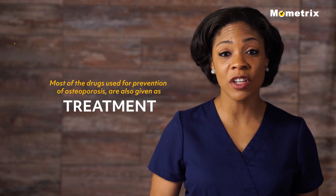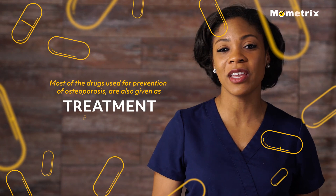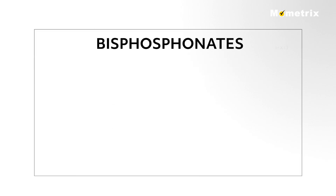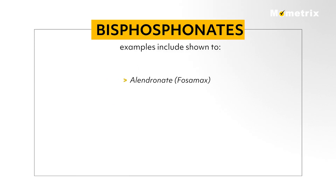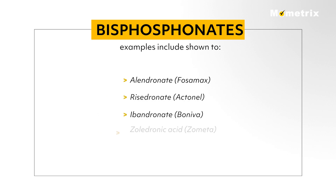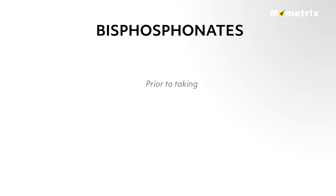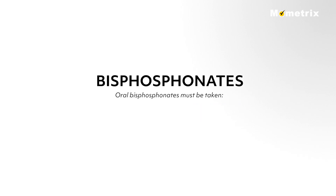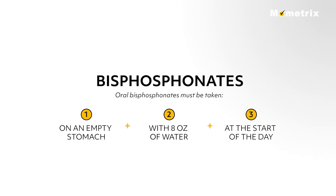Most of the drugs used for prevention of osteoporosis are also given as treatment. The first drugs usually given are bisphosphonates, which have been shown to prevent the loss of bone density as well as reduce the risk of fractures. Examples include alendronate, risedronate, ibandronate, and zoledronic acid. Prior to taking bisphosphonates, it is necessary to correct hypocalcemia and/or vitamin D deficiency.